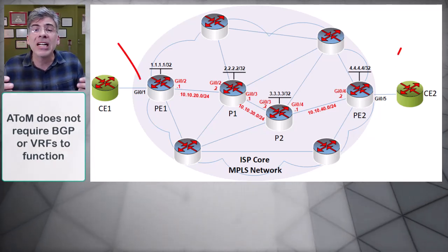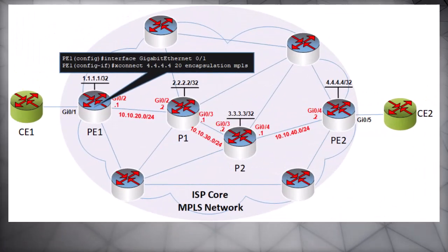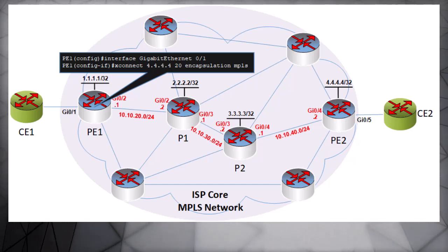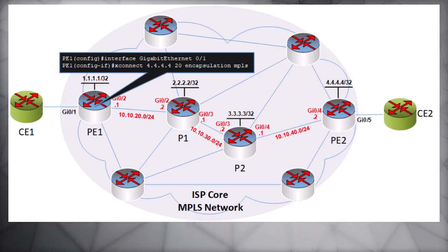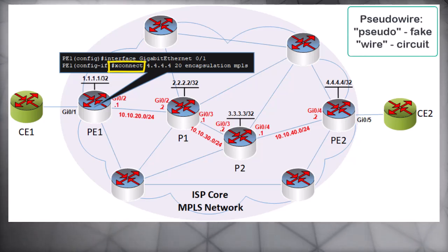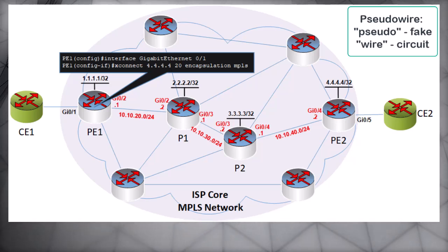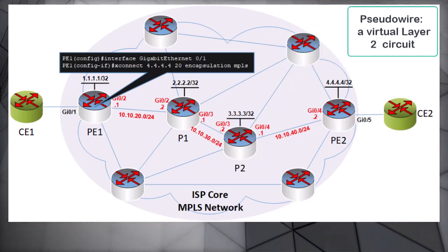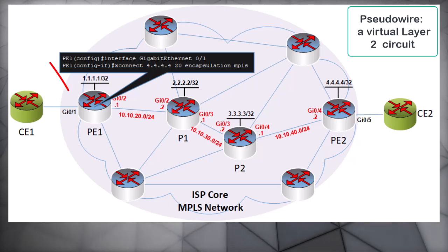We haven't yet configured our customer-facing interfaces, so we'll do that now. To configure AToM to transport Ethernet layer 2 frames, we apply the XConnect command to the GigabitEthernet 0/1 interface, which is the customer-facing interface. This command creates what is known as a pseudowire on that interface. The word pseudowire comes from the Greek word pseudo, meaning fake or imitation, and wire signifies a direct circuit at a low level — so a pseudowire is an imitation wire or circuit created between this and a remote endpoint.